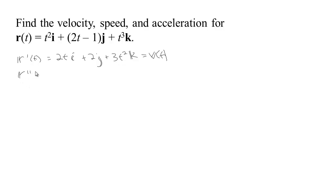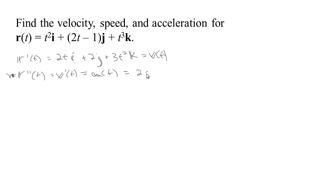Our acceleration R double prime is the derivative of the velocity. Acceleration is the second derivative of position. Taking the derivative of the velocity: the derivative of 2T is 2, we get 0 J, and the derivative of 3T squared is 6T. So we get 2 I plus 6T K. That's our acceleration.